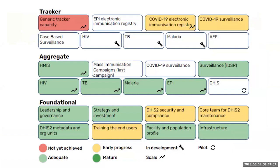This picture shows the framework we use in HISP to assess whether a country has a mature DHIS2 system. We have some foundational pieces on the bottom — equivalent to the poles the house is standing on. These are things you need regardless of whether you're collecting TB data, immunization data, or individual data at each clinic. On the top layers we have aggregate systems — aggregate HMIS, TB, EPI data, and so on — and then tracker, which is individual level data. We call it our maturity profile, and the tool is available on Moodle.